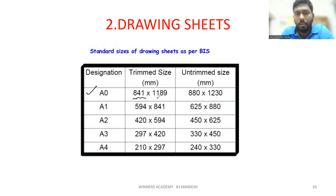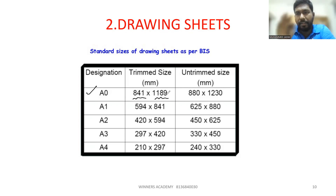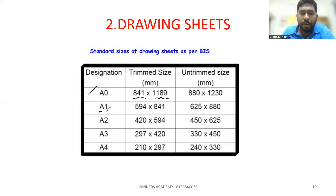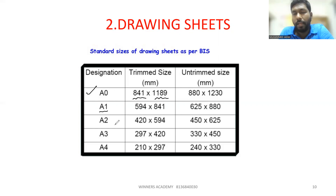The trimmed size dimension is 841mm into 1189mm. Even paper in English — A4 is 210mm into 297mm.